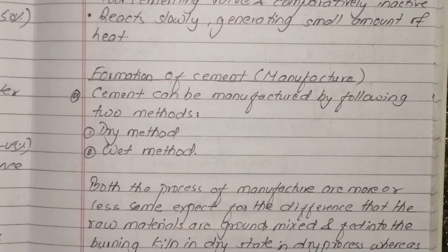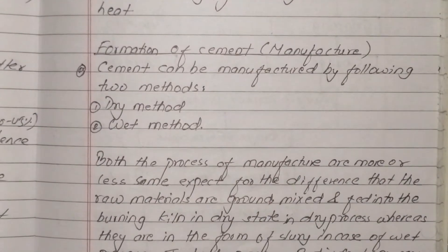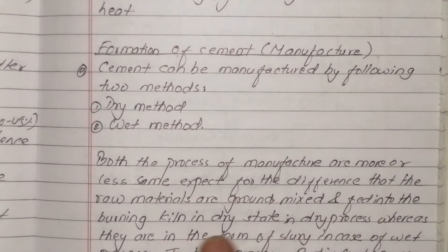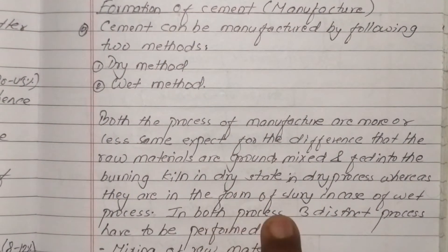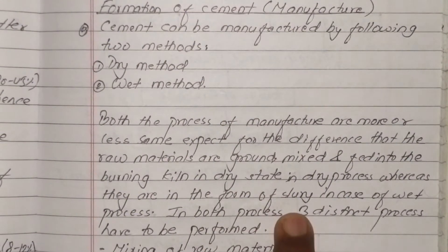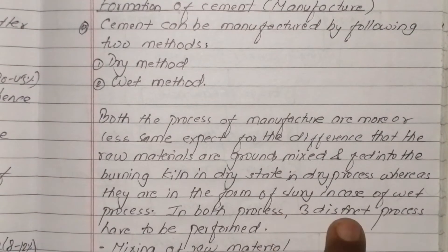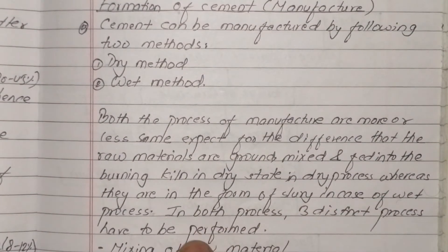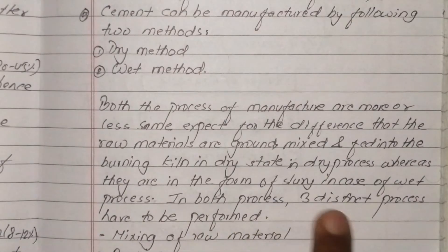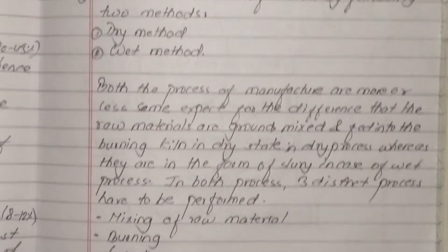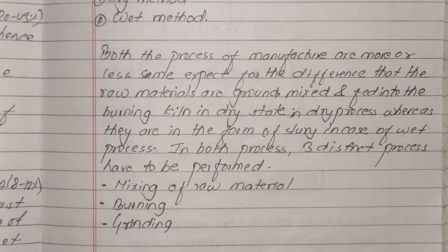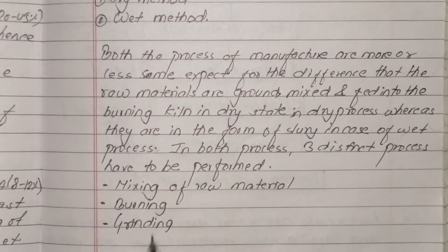Cement can be manufactured by the following two methods: dry method or wet method. Both processes are more or less the same except that in the dry method, raw materials are ground, mixed and fed into the burning kiln in a dry state, whereas in the wet process they are in the form of slurry. In both processes, three distinct operations are performed: mixing of raw materials, burning, and grinding.